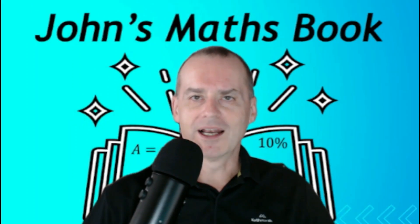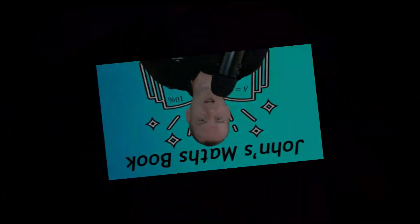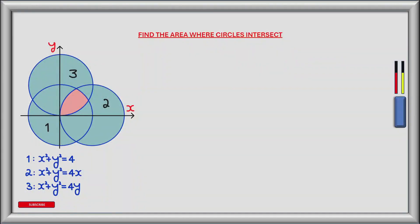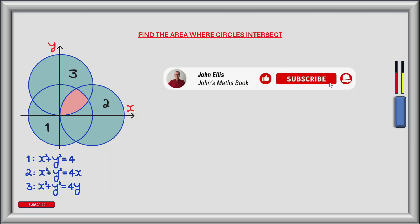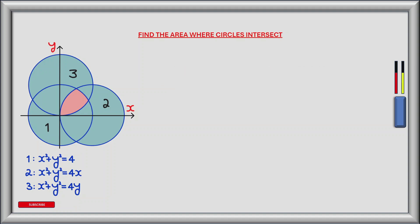Without further ado let's go over to the whiteboard. In this exercise we have three circles labelled here as circle 1, 2 and 3, and the circles intersect. The region of intersection is shown in red. We are tasked with finding the area of the red region of intersection using double integrals and polar coordinates.